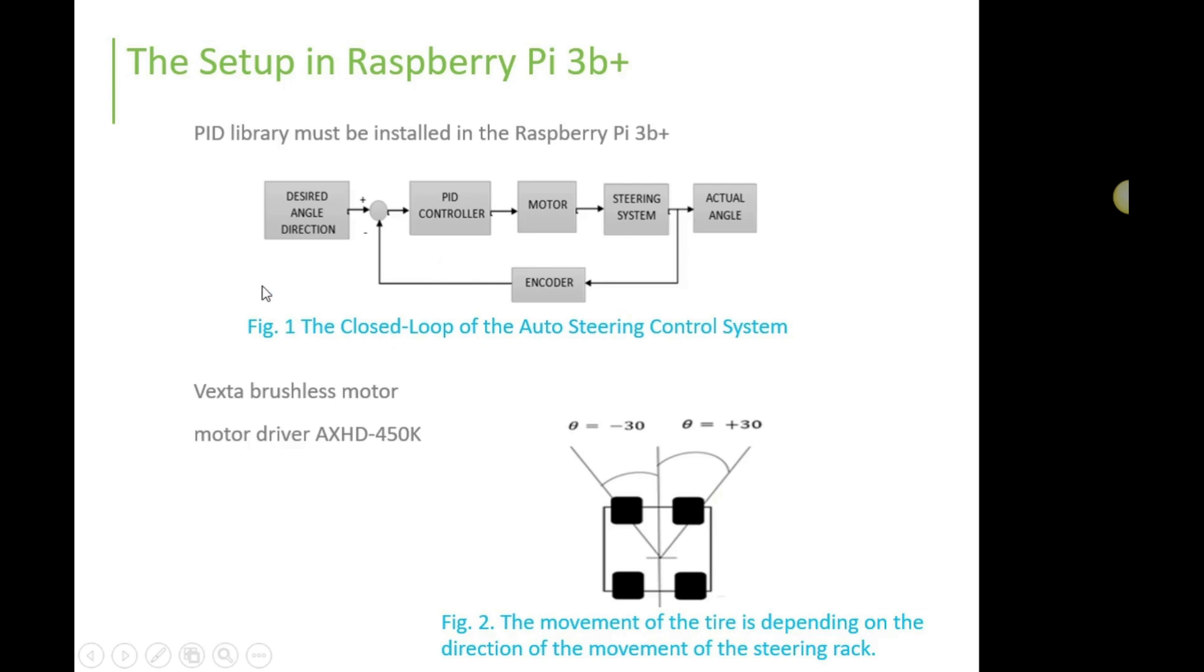Figure 1 shows the overall closed-loop system for this steering control system. The input angle direction is required to drive the steering mechanism to the set value. To test the system performance, the user keys in a set value. The PID controller module in the Raspberry Pi reads the input and transmits the signal to the motor driver AXHD-450K of the Vexstar brushless motor, which motorizes the steering system consisting of steering shaft, pinion, and rack.